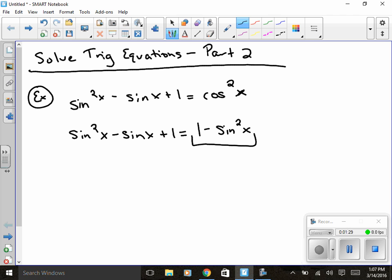So when I move this over I get two sine squared of x minus sine x, and then that's going to actually eliminate the ones and that equals zero.